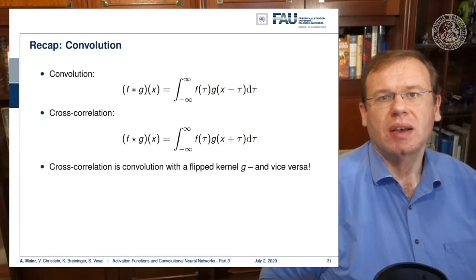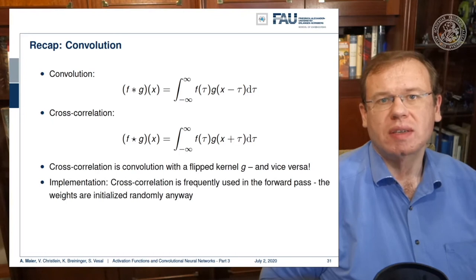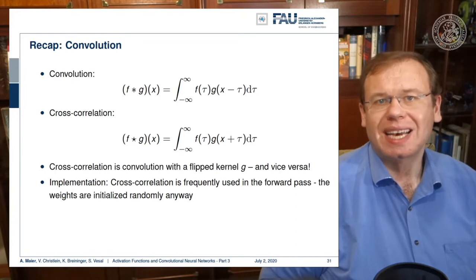What we see quite often is that people talk about convolutions but they actually implemented cross-correlation. So they essentially flip the direction of the mask. If you're creating something that is trainable, it actually doesn't matter because you would learn the sign of the function anyway.